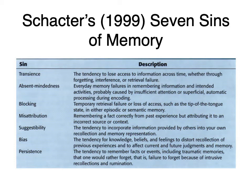The seventh sin is on its own — persistence. This is the tendency to remember facts or events, including traumatic memories that you would like to forget, but you can't because you keep thinking about them. Persistence involves intrusive recollection or rumination. Sometimes we just don't want to remember something, but we keep remembering it. The more you keep remembering it, the stronger that memory trace gets, and the harder it is to not think about it. Some memories persist even though you don't want them to.